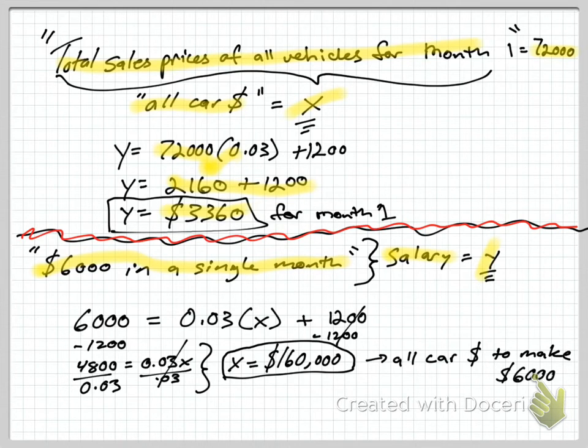So we plug in $6,000 for y, we solve for x. We're going to start with a subtraction on both sides, gets us $4,800. Then we know we've got to do the inverse of this multiplication here, which is division. And that cancels it out,